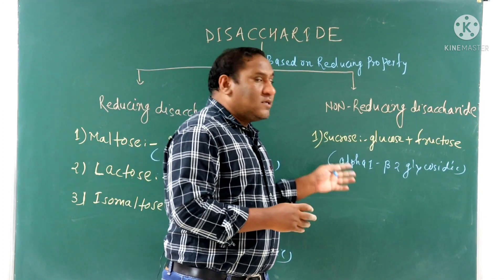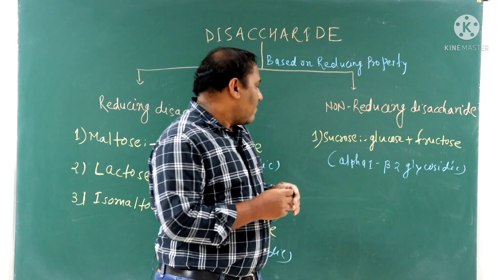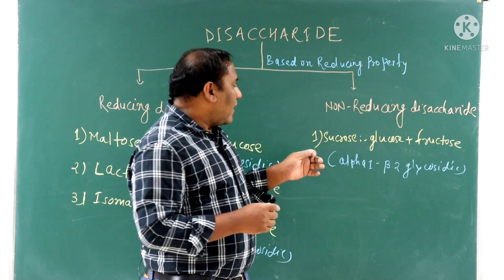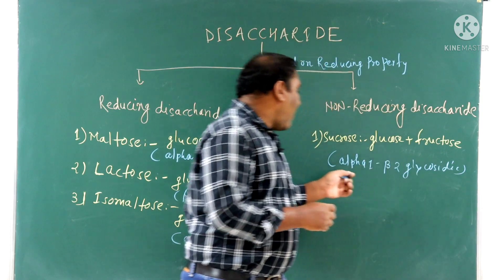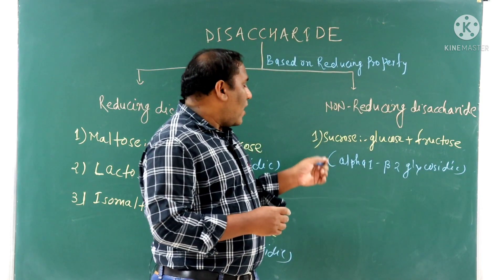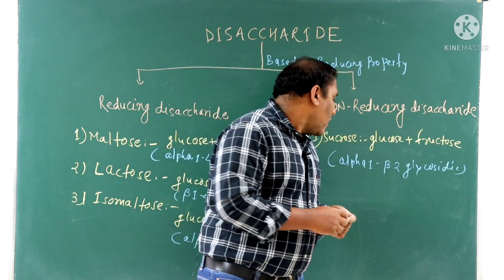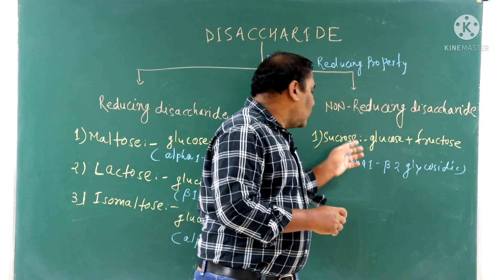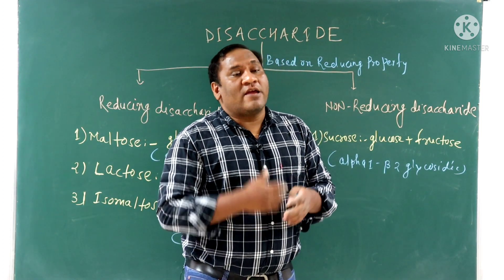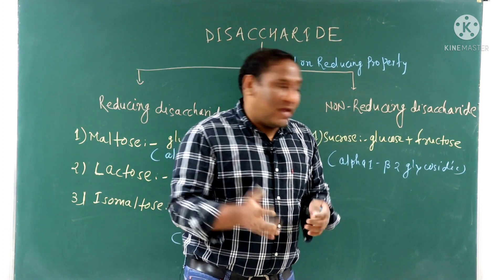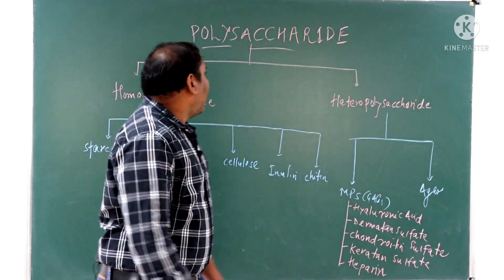An example of a non-reducing disaccharide is sucrose, which is cane sugar. Sucrose contains glucose plus fructose joined by an alpha-1,beta-2 glycosidic bond. Sucrose is hydrolyzed by the enzyme sucrase (also called invertase).